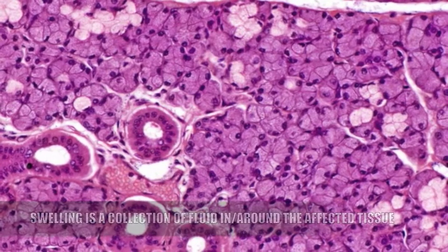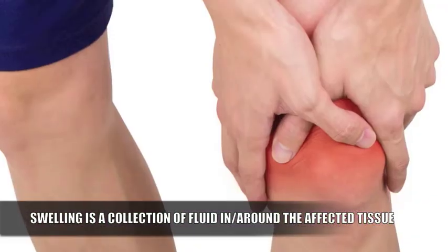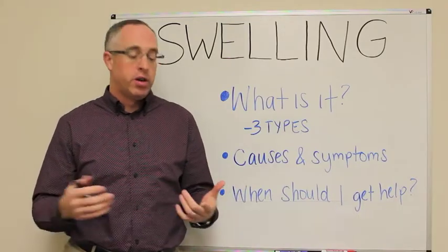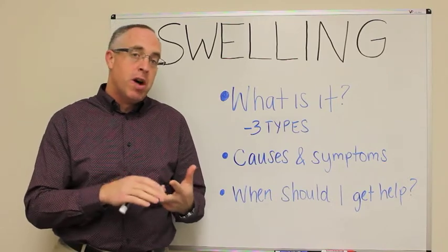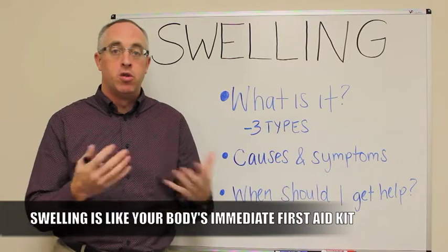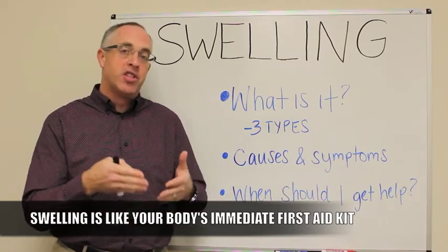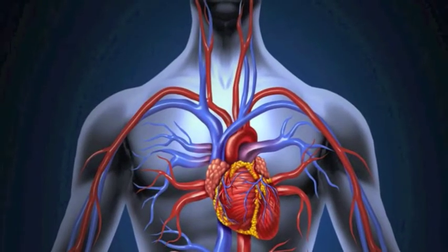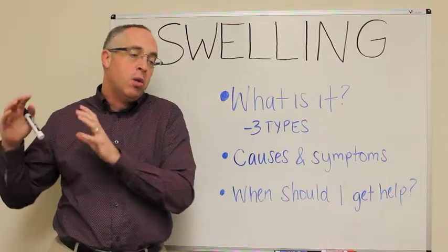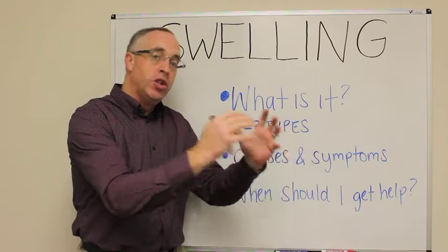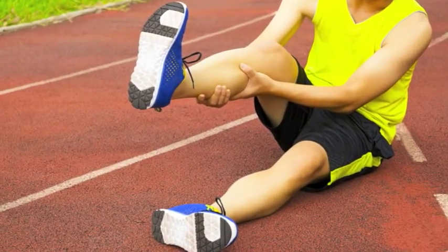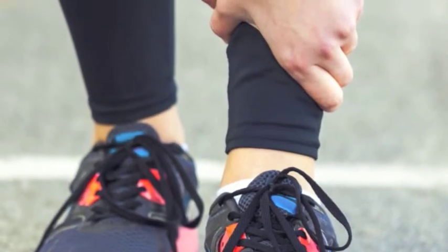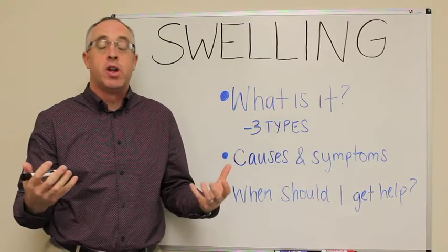Swelling is really a collection of fluid in a specific area. You have fluid traveling throughout your body — think of it as water carrying nutrients, almost like your body's immediate first aid kit. When you have an injury, irritation, or abnormal stress, the body floods a good portion of that fluid to that area, taking it out of the bloodstream and loading it into the muscle, joint, or tissue that's irritated, injured, or overworked. That fluid collection is what we call swelling.